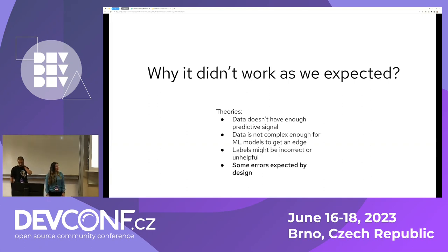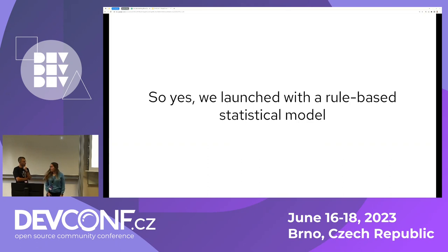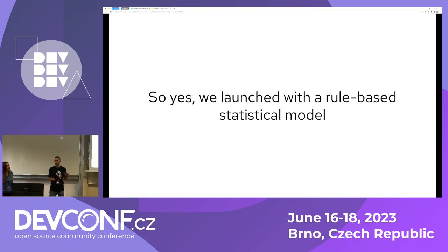The last theory: in Kubernetes, some errors are expected by design. For example, metrics from KubeAPI during restarts will return 404s — that's a normal situation. We call them flapping alerts: a metric fires for three to five minutes then self-resolves. It's important to either have an algorithm smart enough to ignore those fluctuations, or pre-clean the dataset to exclude them. We launched with a rule-based model instead of a machine learning model and we're not ashamed about it.